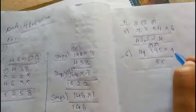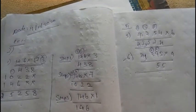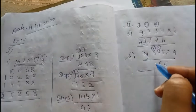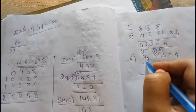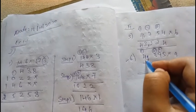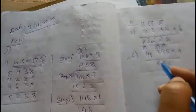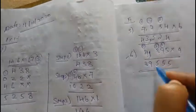9 times 3 is 27, plus 8 is 35, 3 carry. 9 times 4 is 36, plus 3 is 39. This will be your answer.